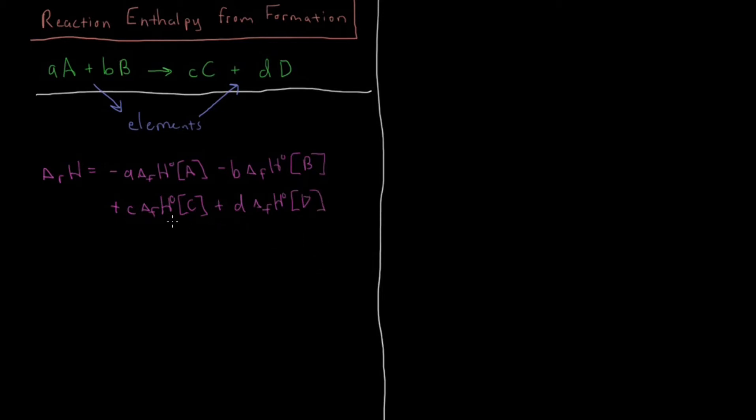So what we have here is the enthalpy of formation of the products minus the enthalpy of formation of reactants. It's still just products minus reactants, and all we did was this hypothetical intermediate step where we took them, made their elements, and then reformed the products. Because of Hess's law this works, so if we know the enthalpy of formation for all the compounds in our reaction, we can calculate the enthalpy of our reaction from that.